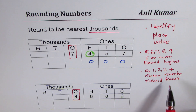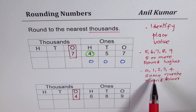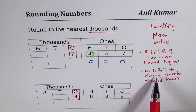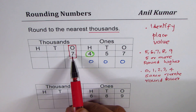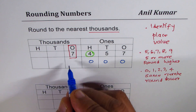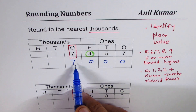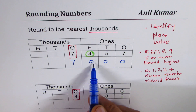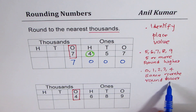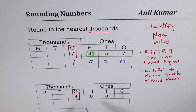You will see how we round lower: since the number on the right is four, which is in the second category, we retain the number. So seven remains seven. Therefore 7,457 is rounded to 7,000 — that means round lower.